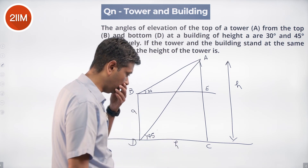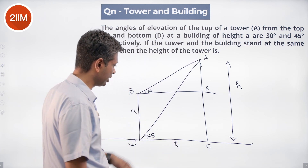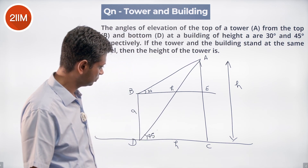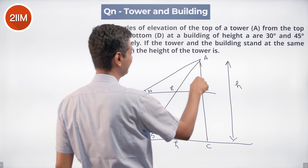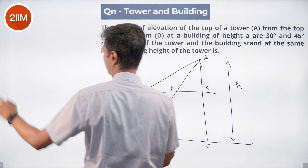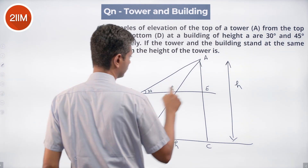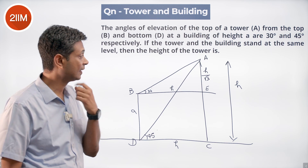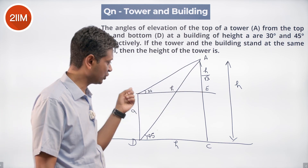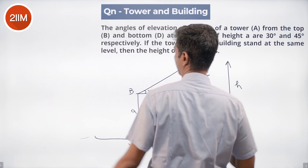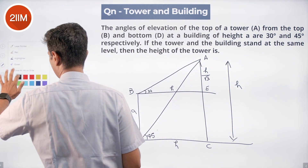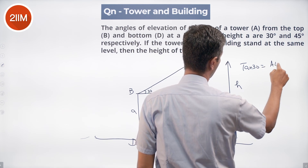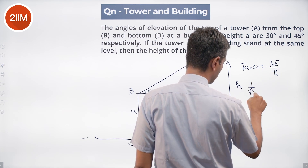Since the 45-degree angle forms a right isosceles triangle, DC equals BD equals H. Using tan 30 for triangle ABE: tan 30 = AE/H, which gives AE = H/√3. So tan 30 is 1/√3, meaning AE by H equals 1/√3.